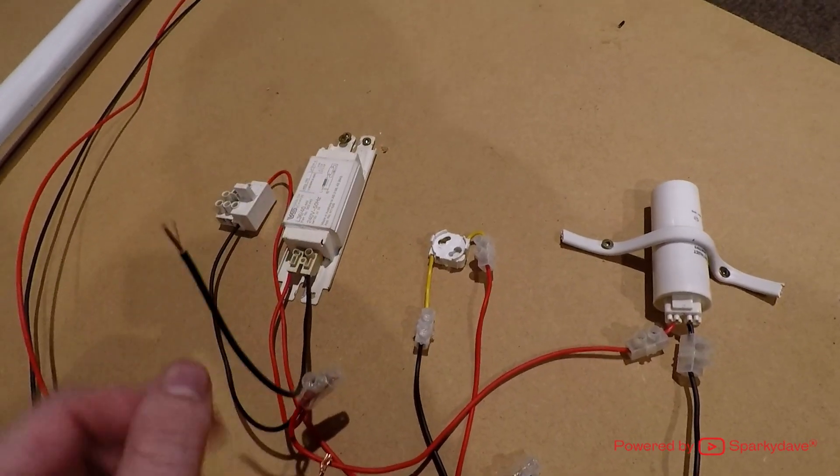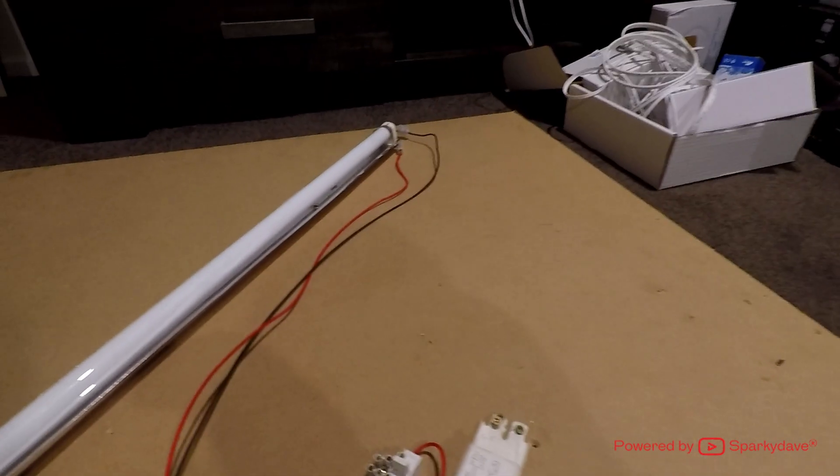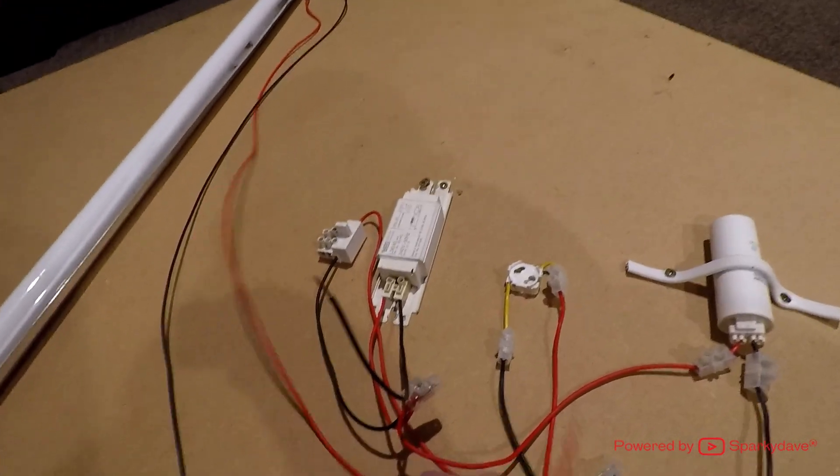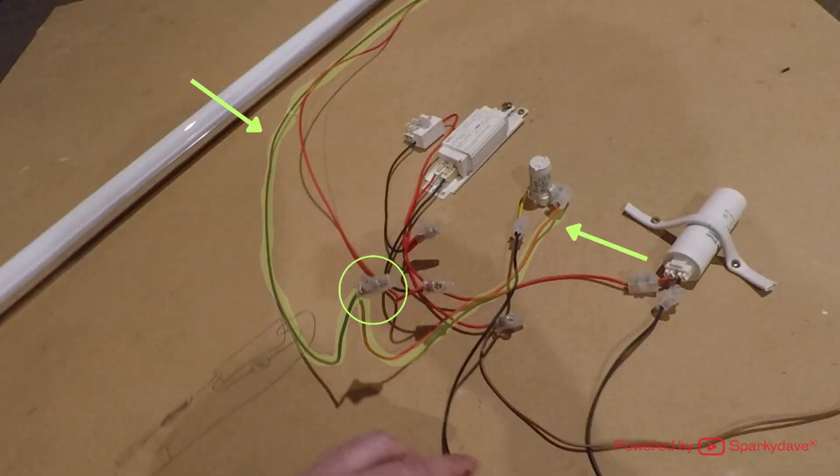From the black side of the ballast I'm going to go to one end of the light fitting itself on the red cable. On the black cable of that same end I'm going to connect it to the red side of the starter.